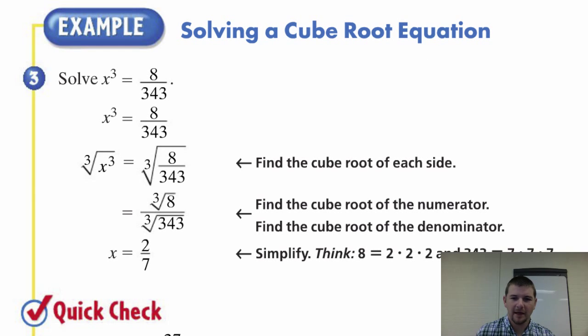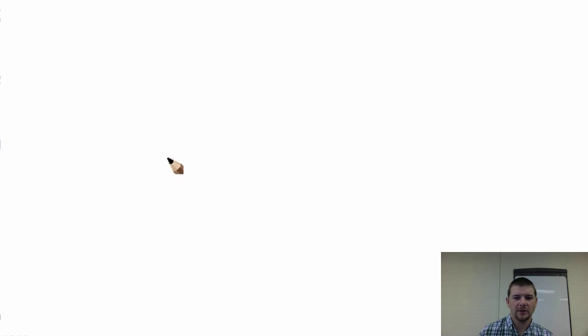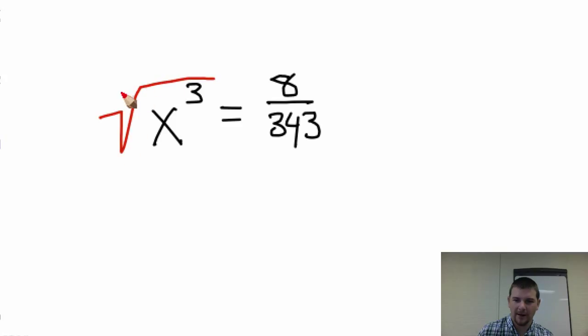Example problem three, solving a cube root equation. We're really going to kick it up a notch—level up here. X cubed equals eight over three hundred and forty-three. To solve, just as with other algebra problems, we want to apply inverse operations to both sides of the equation. We'll apply the cube root. That will be the inverse of cubing.